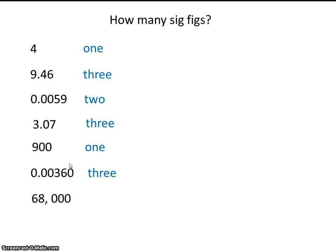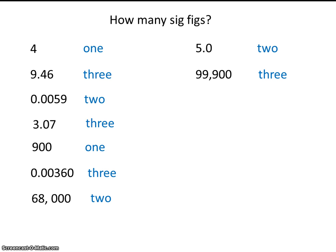What do you think? That's right, 2 sig figs. What about this number, 5.0? That's right, 2 sig figs. What about this one with those 2 trailing zeros? No decimal place — that means 3 sig figs.